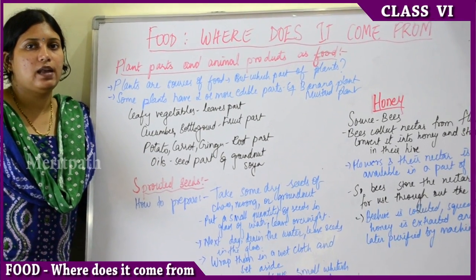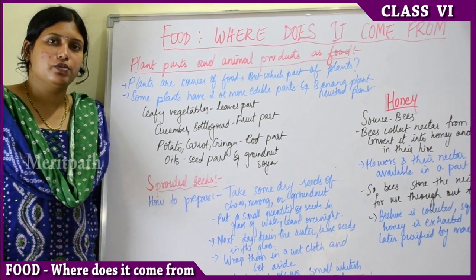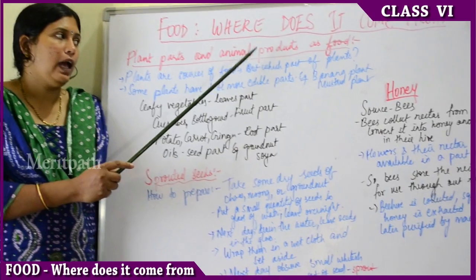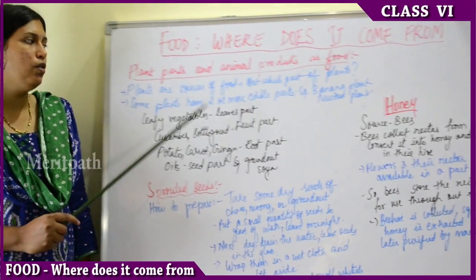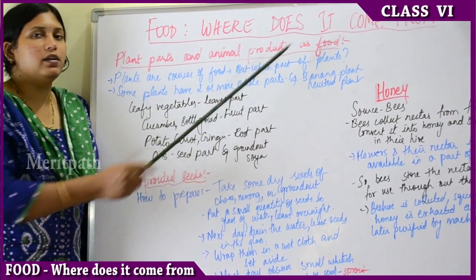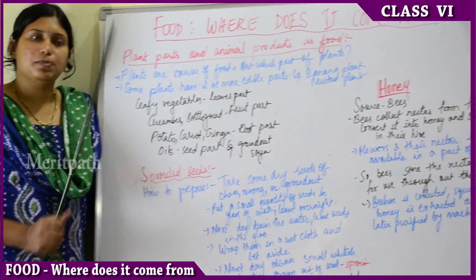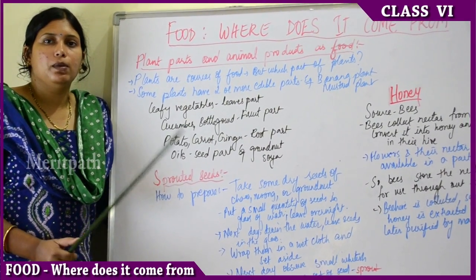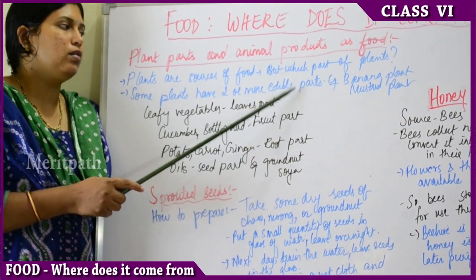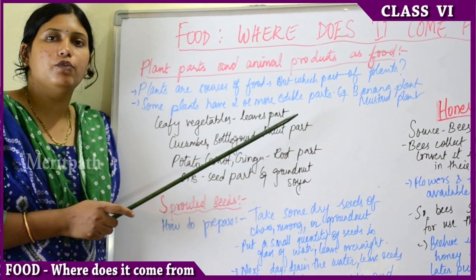We have read that plants and animals are the sources of food. Now we will know which part of the plant and which parts of the animals are sources of food — plant parts and animal products as food. We know that plants are sources of food, but which part of the plant do we eat? Some plants have one edible part, others have two or more. Edible means suitable for food; non-edible means not suitable for eating.